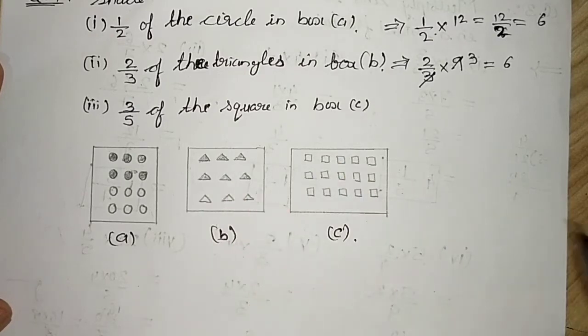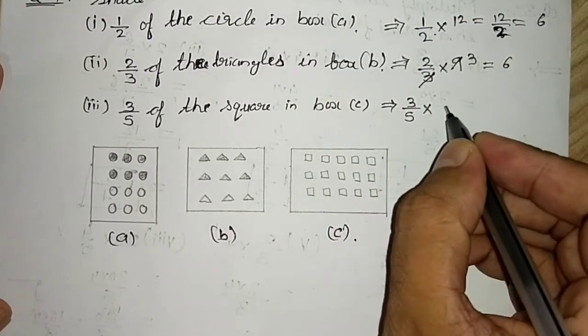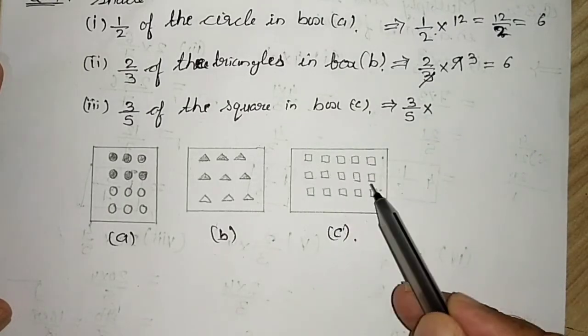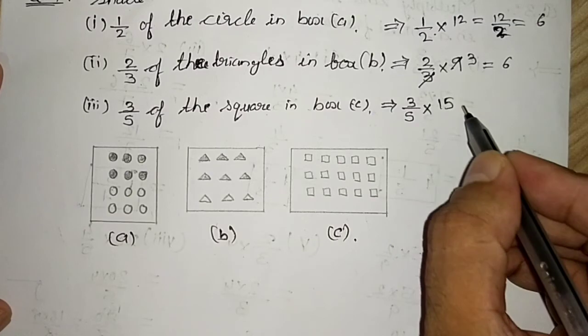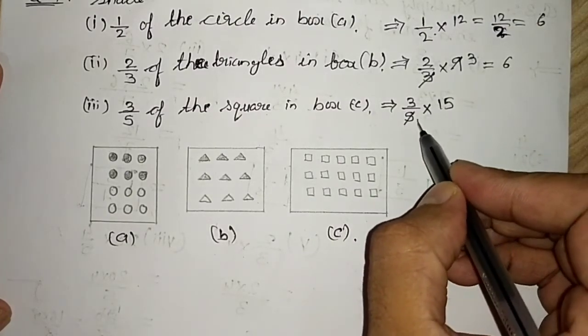Now moving to third part. Third part says 3 by 5 of the squares in the box C. And how many squares are there in the box? 5, 10, 15. It is 15 box, 15 squares. Sorry, 5, 1s and 5, 3s.